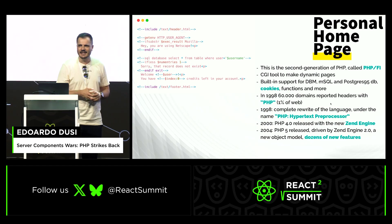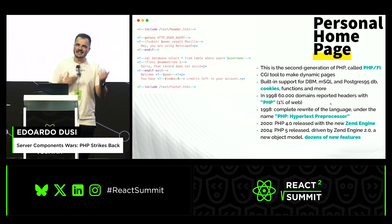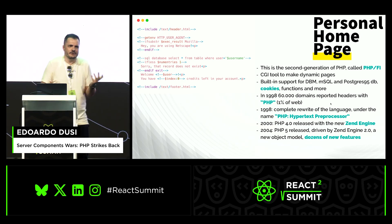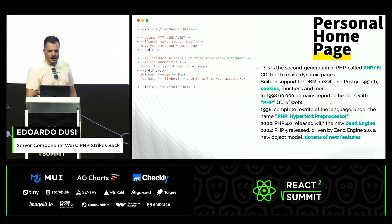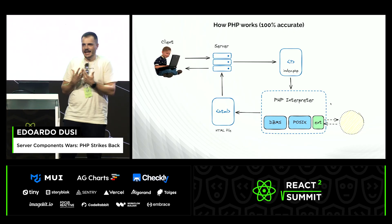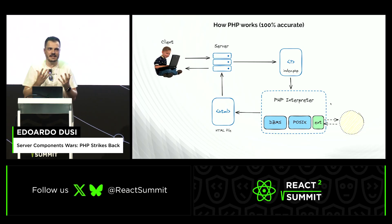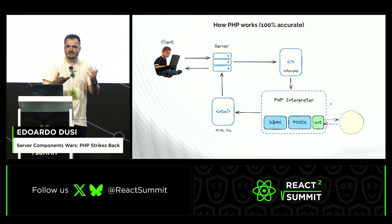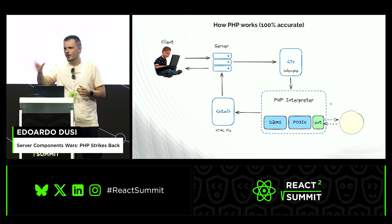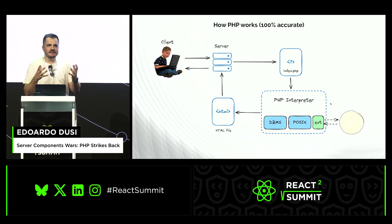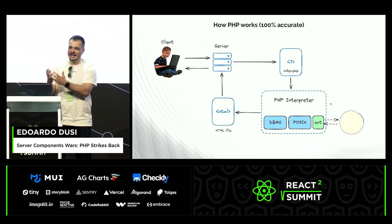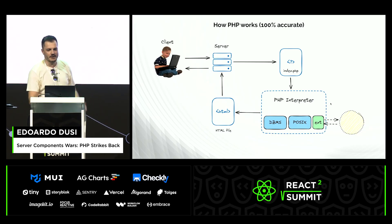After three complete rewrites of the core, PHP now means something completely different and no one knows the original meaning. Here's how PHP works: the client makes a request to the server. The server routes the request to an index.php. That file is run by an interpreter, which has access to the DBMS API, the POSIX API, and external APIs. The purpose of the script is to generate an HTML file, which is then sent back to the client. That's the whole round trip.